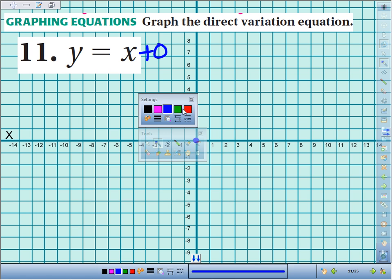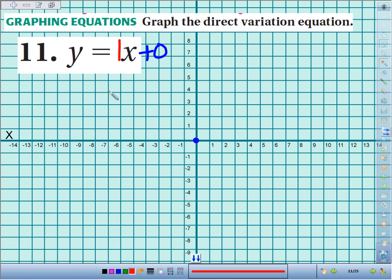Now we look at our slope. The coefficient of x is 1. We don't see it, but there it is, 1. And the 1 is a fraction, it's like 1 over 1.